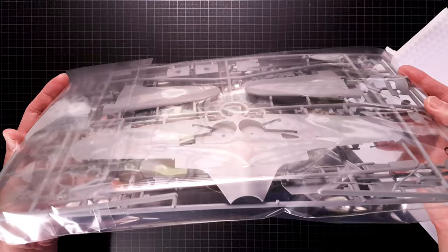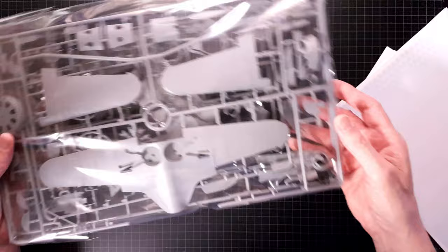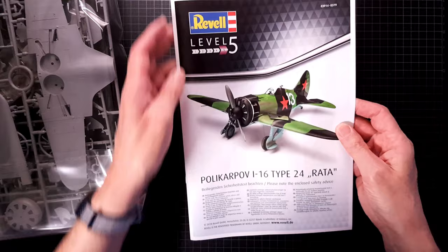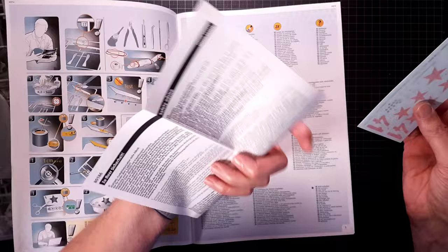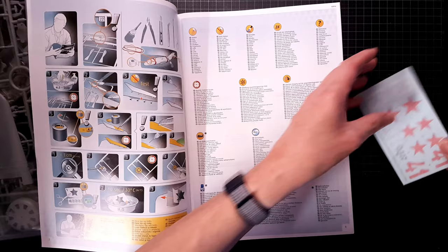Let's open up the box and see what's inside. First of all we have three or four sprues - three in grey plastic and one clear part. We have the assembly instructions, a small safety leaflet, and the decals.